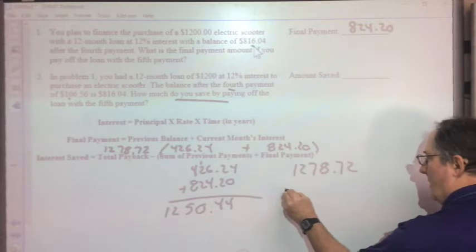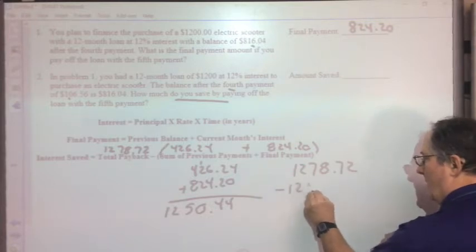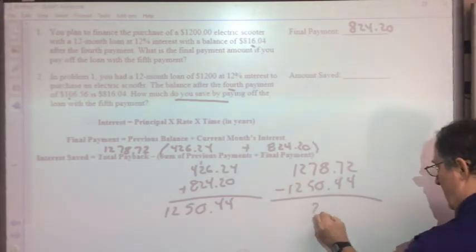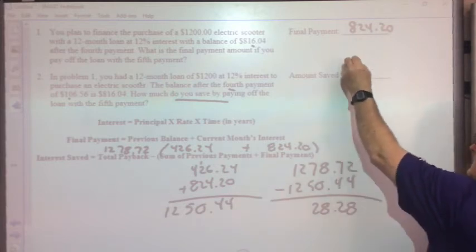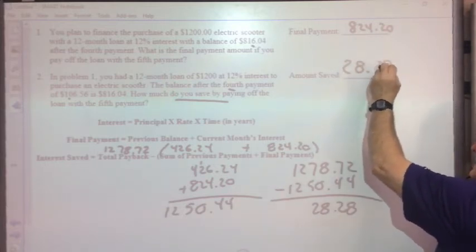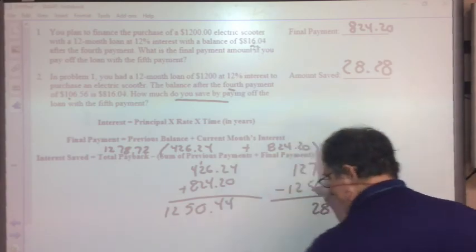Now what you do is, what was the loan going to be worth before, minus what did I actually pay on it? And you get $28.28 is what my savings amount was. You make the choice if it's worth paying off early.